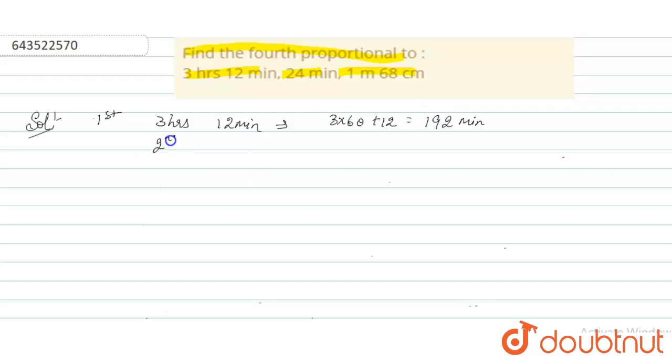And the second term is 24 minutes. So let us find the ratio. The ratio is 192 upon 24. That equals to 8.